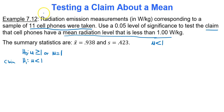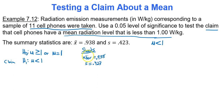In Google Sheets, go to the data list tab and the t-distribution region. You'll type in x-bar equals 0.938, sample standard deviation s equals 0.423, sample size n equals 11, the population mean value under consideration is 1, and the alternative hypothesis sign is less than. These are the five things you need to input to get the p-value.